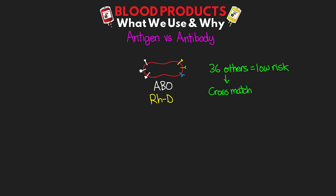For our ABO antigen, there can either be the A type, B type, AB type, or the none type, which is what we refer to as O. And then for our RHD, it's either positive or negative.